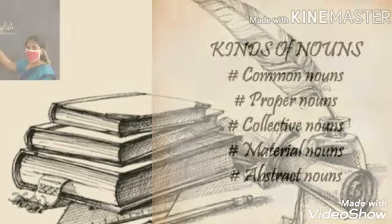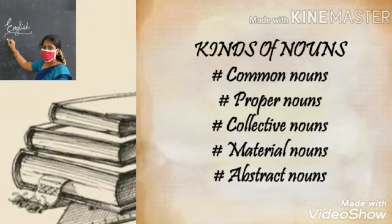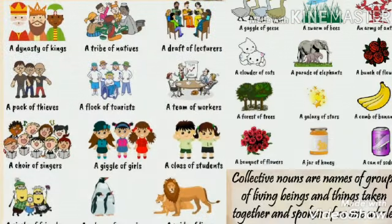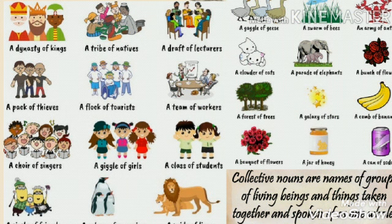Are you clear? Definition of collective nouns. Collective nouns are names of groups of living beings and things as taken together and spoken of as one whole.